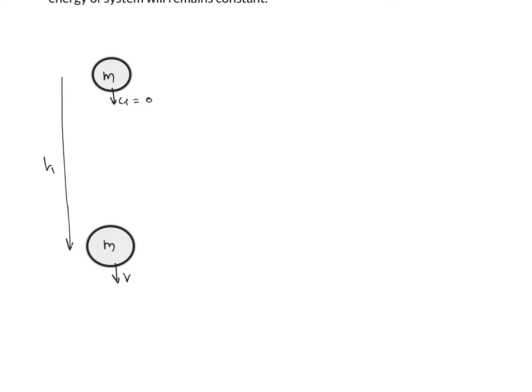We can solve the same dropped-object example using conservation of mechanical energy. Since no non-conservative forces are acting, we write: ME_initial = ME_final, that is PE₁ + KE₁ = PE₂ + KE₂. Taking point 1 as the reference, PE_initial = 0 and KE_initial = 0 since initial velocity is zero.